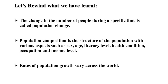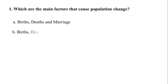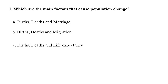Let us see what you have understood today. Question number one: which are the main factors that cause population change? Option A: births, deaths and marriage. Option B: births, deaths and migration. Option C: births, deaths and life expectancy. Option D: births, deaths and war. The correct answer is B: births, deaths and migration.